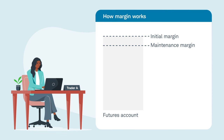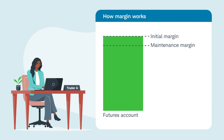Maintenance margin is lower than initial margin. Typically, the initial margin requirement will be 110% of the maintenance margin requirement. When traders first enter a futures position, they need to put up the initial margin requirement. However, after establishing the position, traders are held to the maintenance margin requirement.